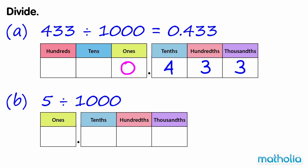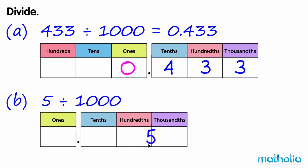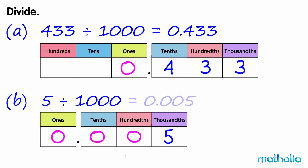B. 5 divide 1000. Write 5 in a place value chart. Shift the digit three places to the right. 5 divide 1000 equals 0.005.